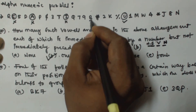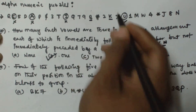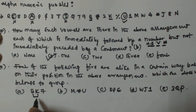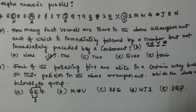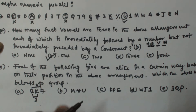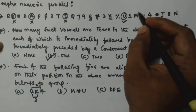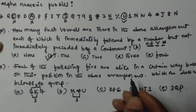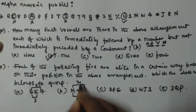Looking at option A, bk7: 'b' is in the sequence, and 'k' is two positions to the right of 'b' — three steps from the right side. Then '7' is one position to the left, so two steps backward from 'b'. Similarly, option B, m*u: from 'm', '*' is three steps to the right, and 'u' is two steps to the left of 'm'.